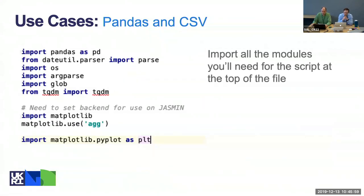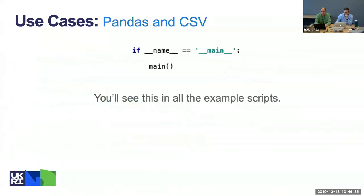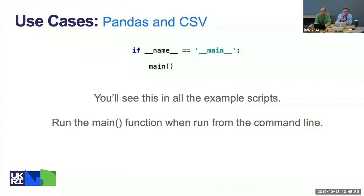At the top of the script we've got our imports: we're importing pandas — again renamed as 'pd' — we're importing argparse, and we're importing a date parser. You import everything you need at the top of the file. The matplotlib section you see here is something you'll need when working on JASMINE, mostly because you can't do an interactive plot on JASMINE — so you set it up this way and it will produce plots and save them to disk, which you can then copy to your local environment. At the bottom of each example you'll see the '__name__ == __main__' block calling a main function.